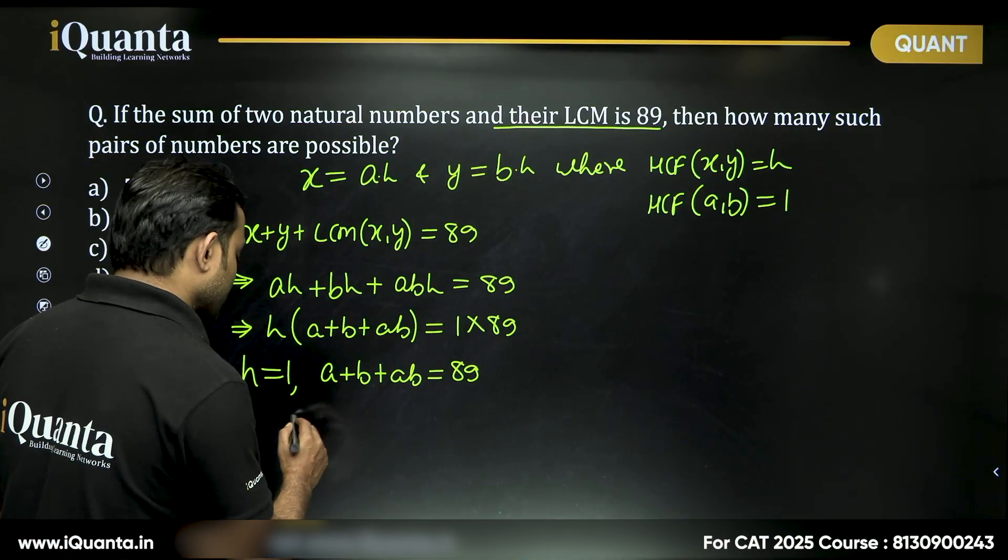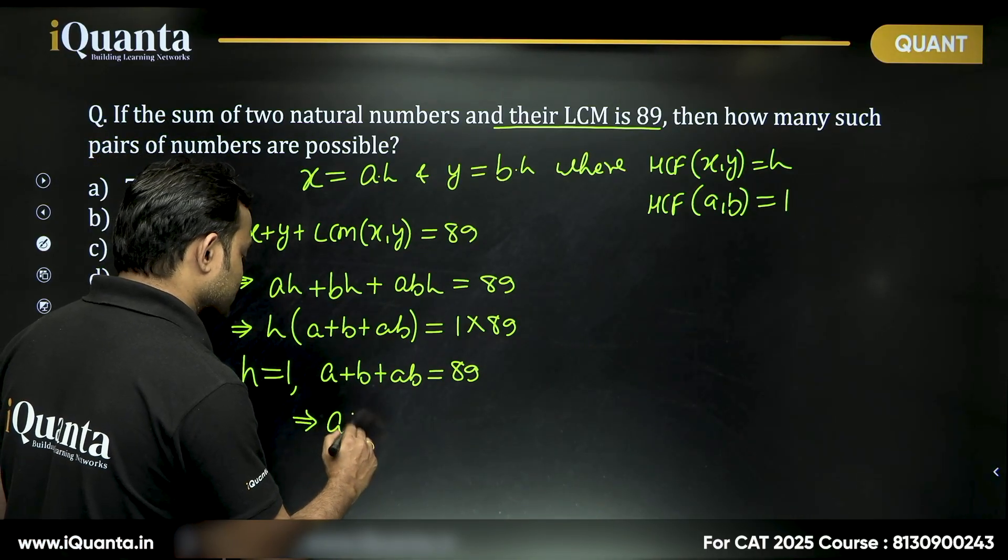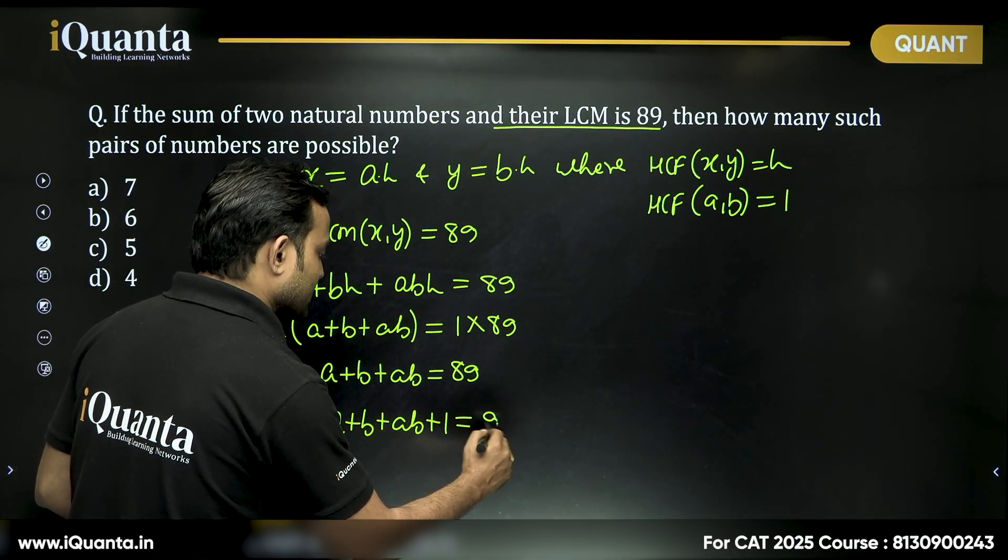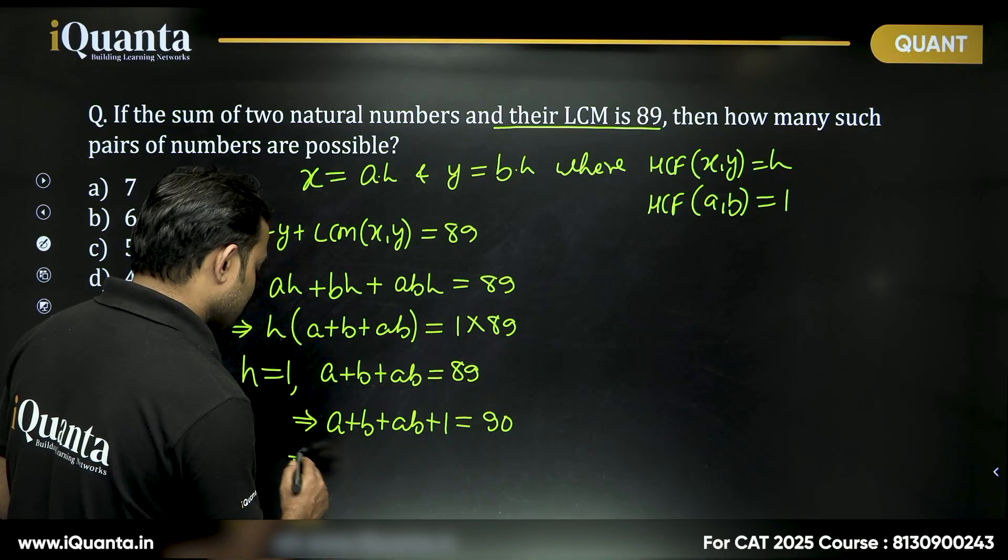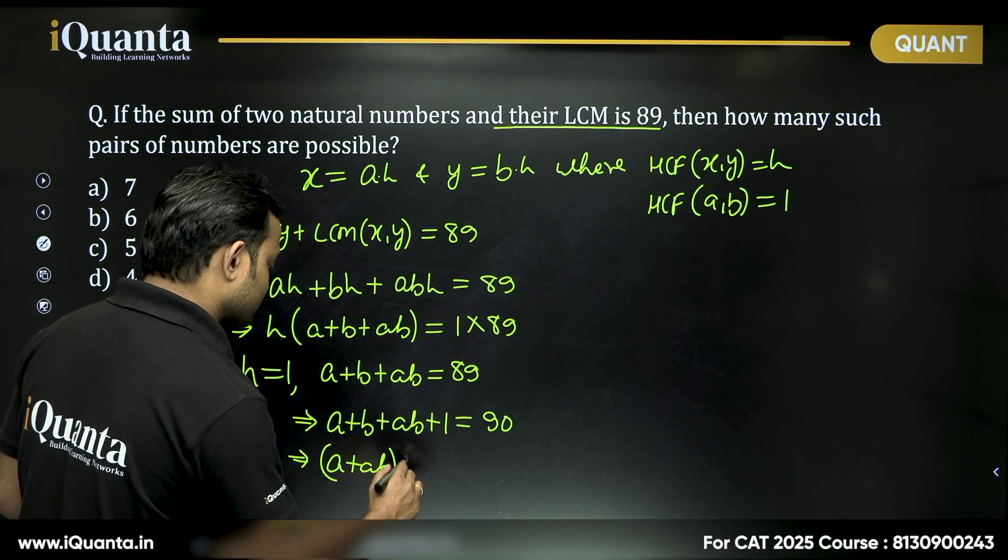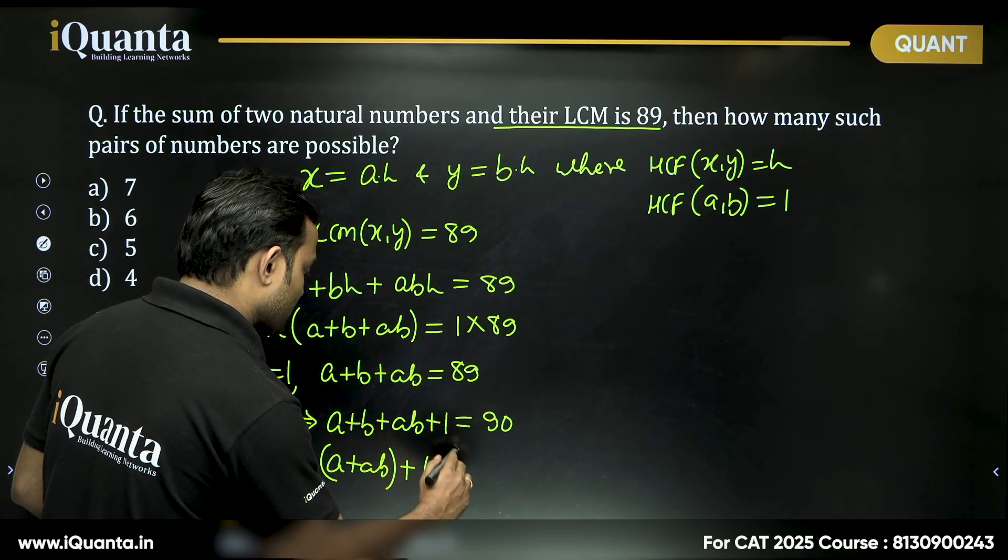Now, from there, if I add 1 on both sides: A plus B plus AB plus 1, we get 90 on the right-hand side. I can write A plus AB together, B plus 1 together, this equals 90.